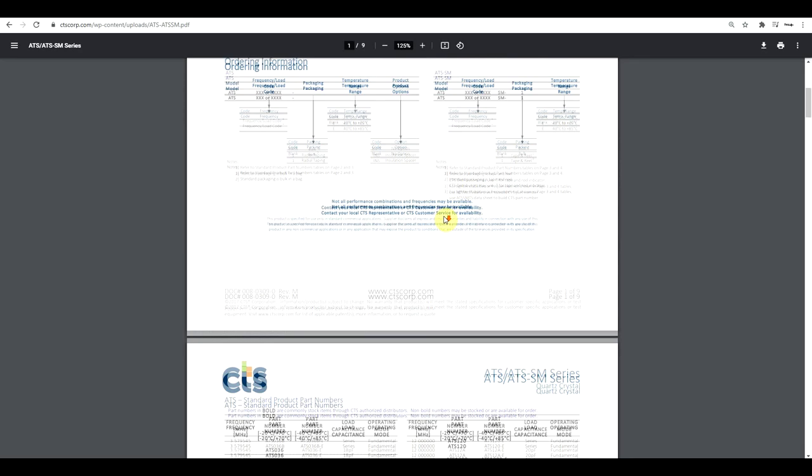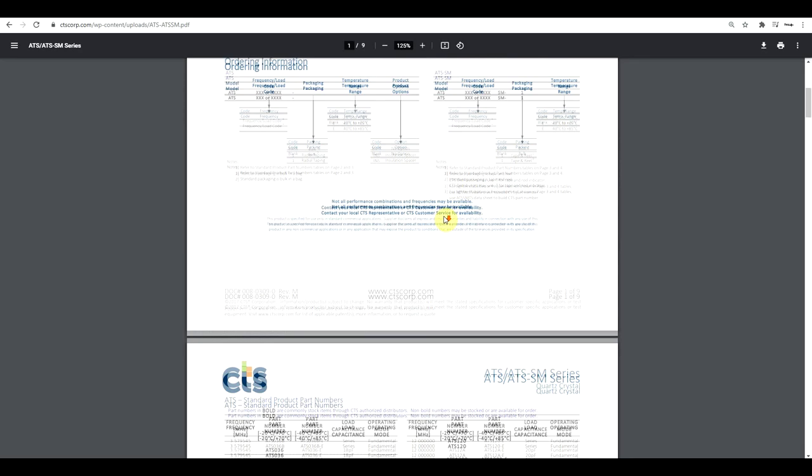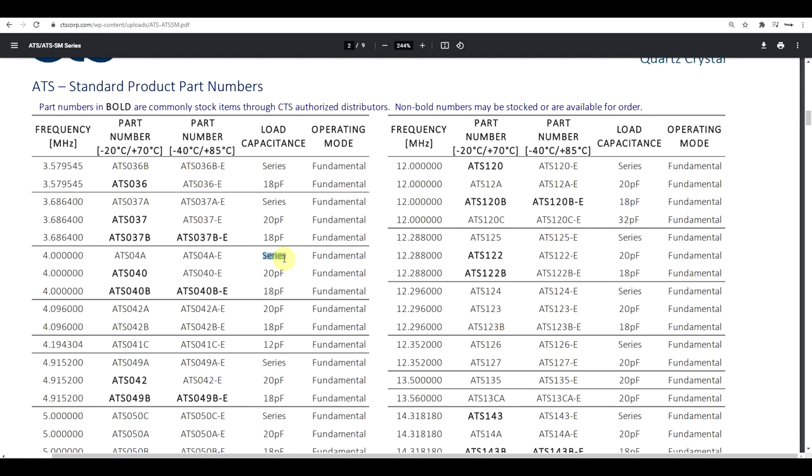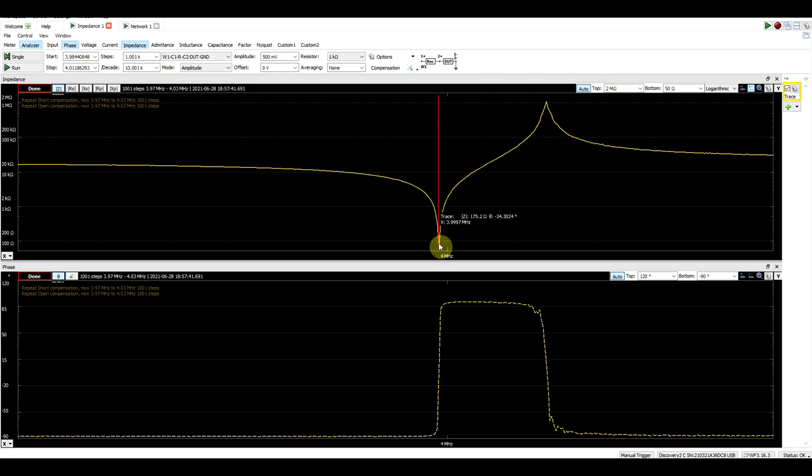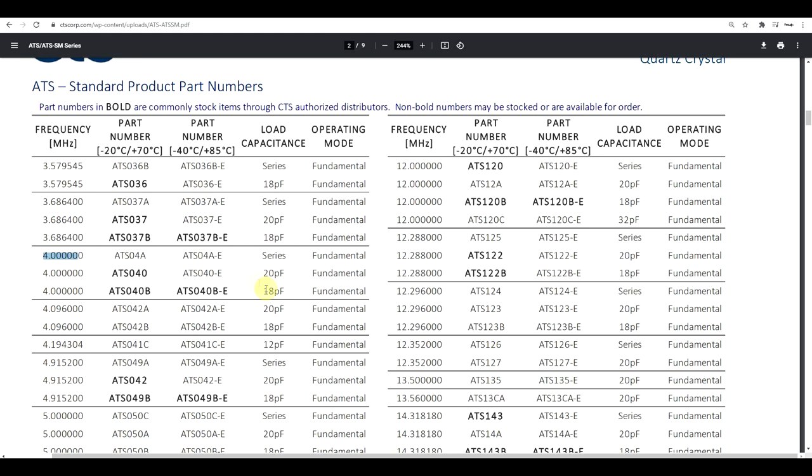To understand why that is, if we look into a more detailed quartz crystal datasheet, we will see that the various crystals are specified for various load capacitances. So on the one side we have a series term added in here, which basically means that the quartz is designed to work in series resonance mode. So for example, a 4 megahertz quartz crystal designed for series mode will have the first resonance, the series resonance, at exactly 4 megahertz, whereas quartz crystals designed for parallel resonance mode will need an extra load capacitance to get to the desired frequency.